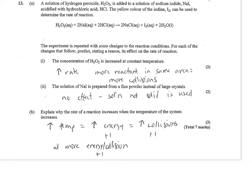Part B, explain why the rate of reaction increases when the temperature of the system increases. What they're looking for is an increased temperature means there's increased energy. That means there's increased collisions and there's more energy per collision.